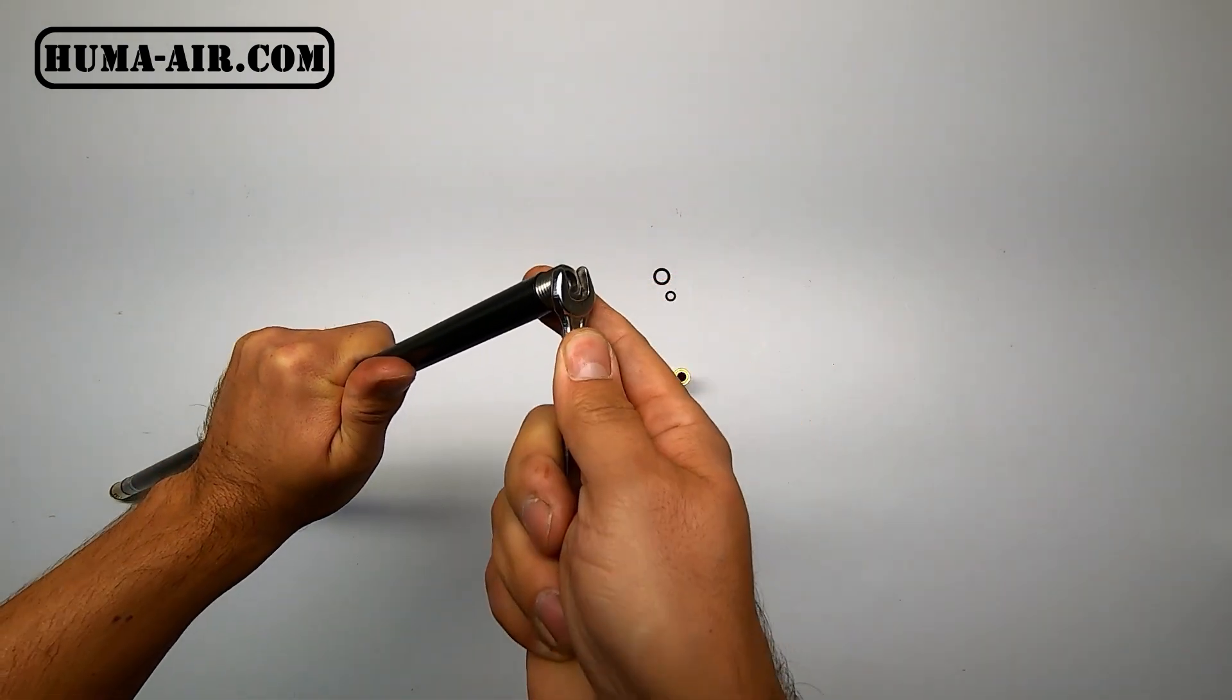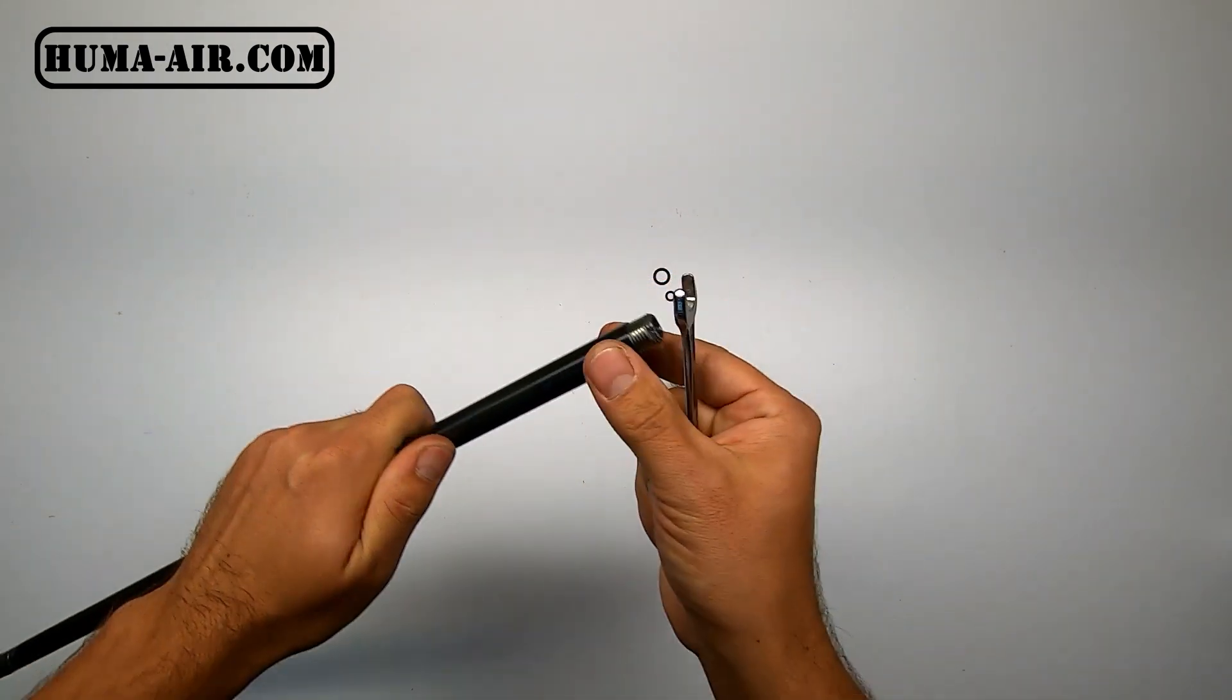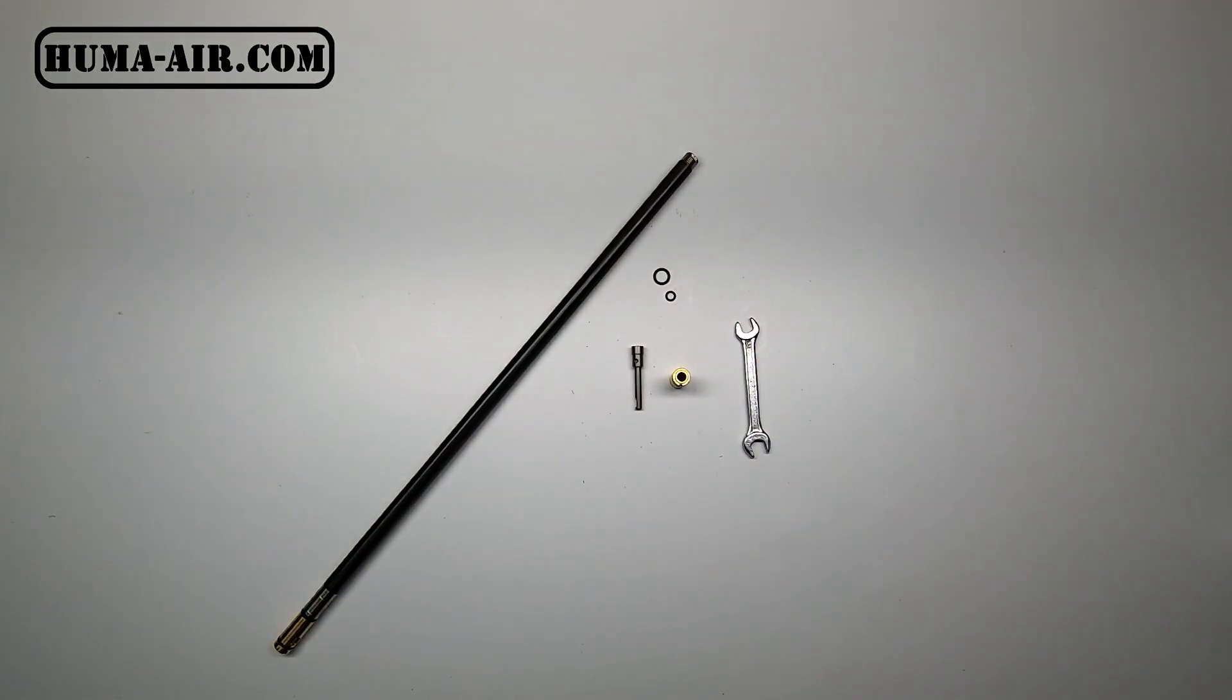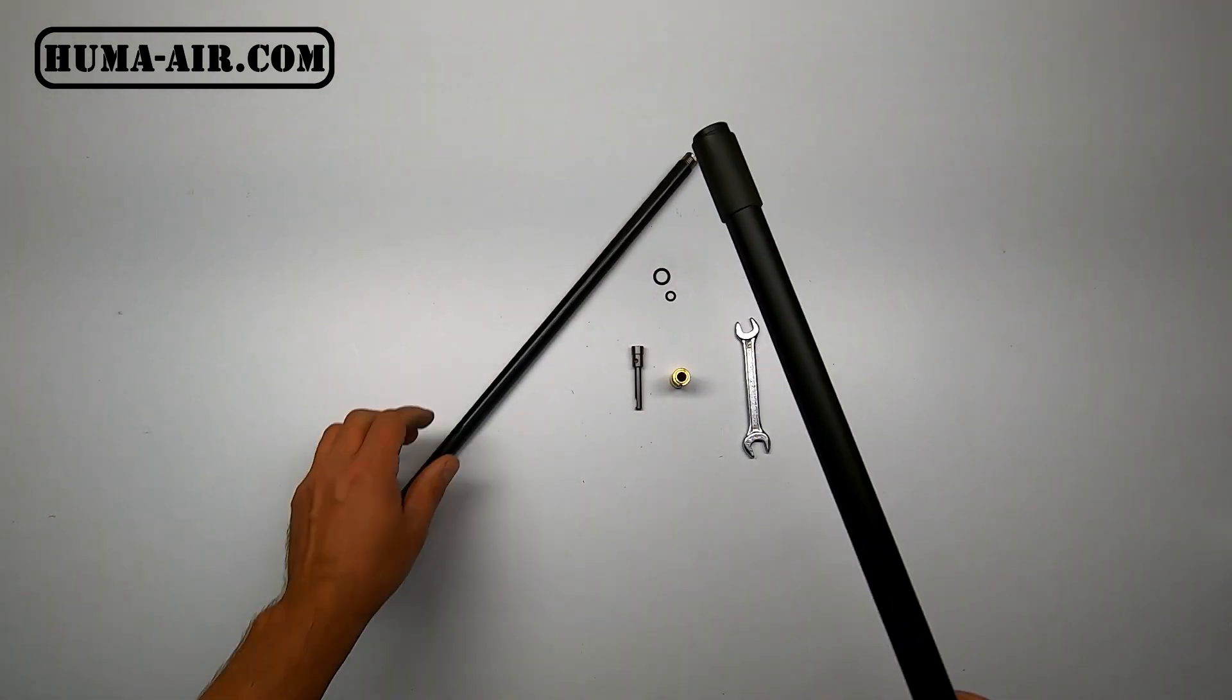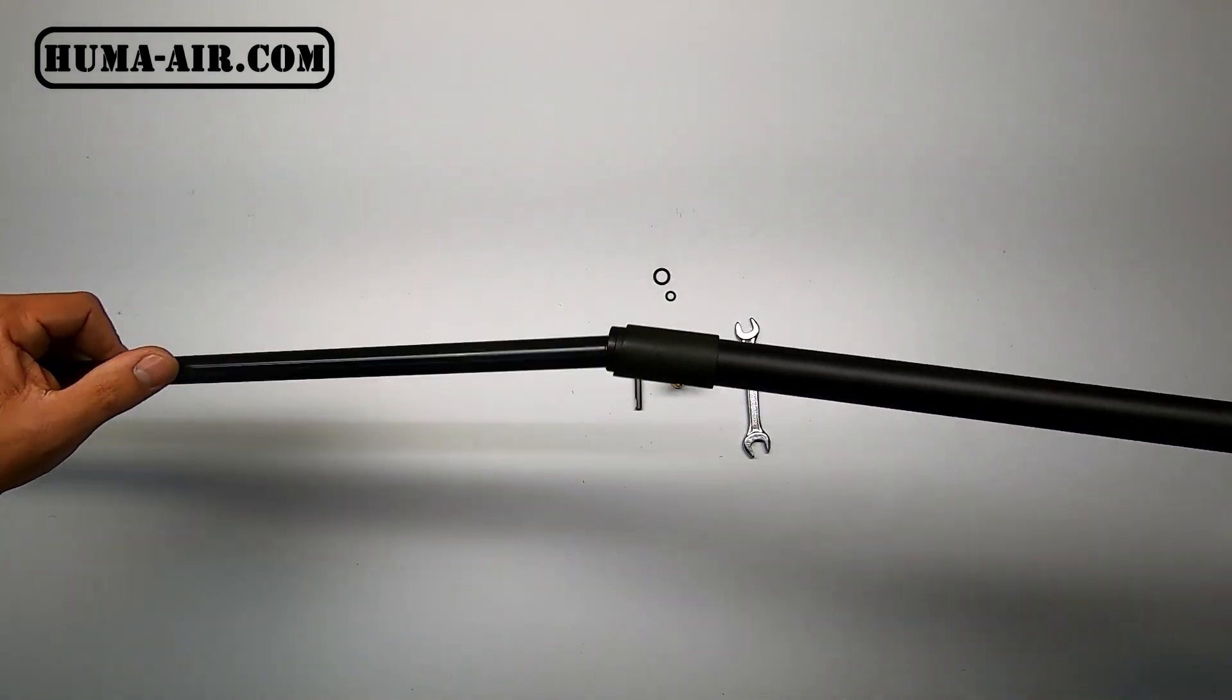And now you can reinstall your shroud. So both Yuma air transfer ports are installed. The 22 caliber we did on camera and the 25 caliber I did off camera.